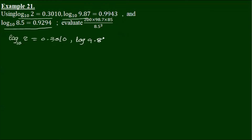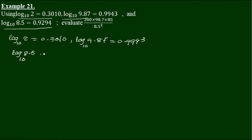Log 9.87 equals 0.9943. Now take log 8.5 equals 0.9294.